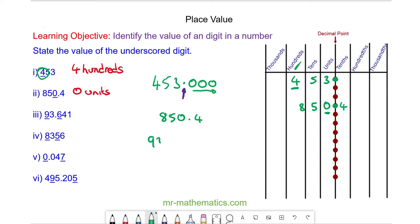For 93.641 we're going to line up our decimal point. We have six tenths, four hundredths, and one thousandth, with three units and nine tens.